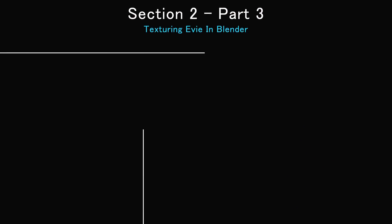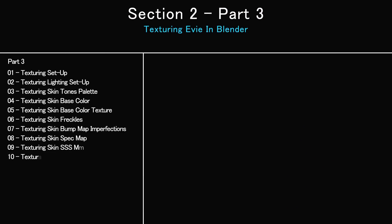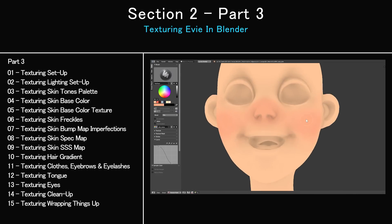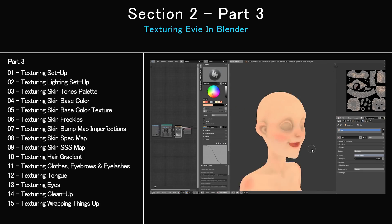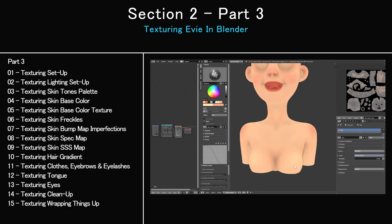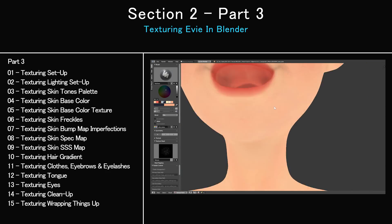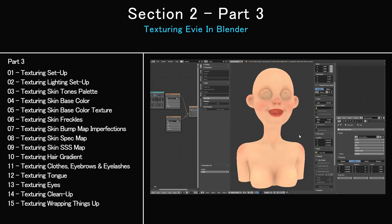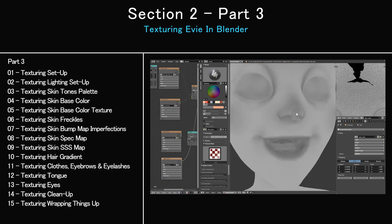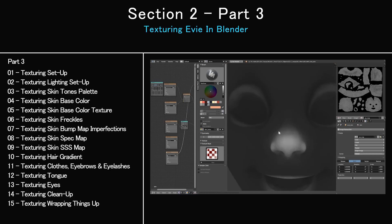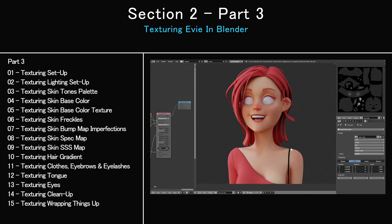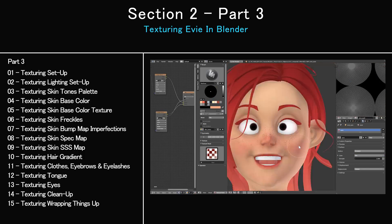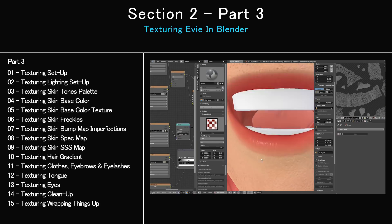In Part 3, we will start texturing our character. This is a 15-part video where I will show you how to set up your character for texturing, talk about skin tones, and show you how to texture the many different layers for the skin — from the base color to a more refined look including imperfections, freckles, and more. I will also take you through creating different maps for the skin, including the bump map, spec map, and subsurface scattering map, which we will later utilize to create the skin material. Furthermore, I will show you techniques to create textures for the rest of the character, including the hair, clothes, and eyes.